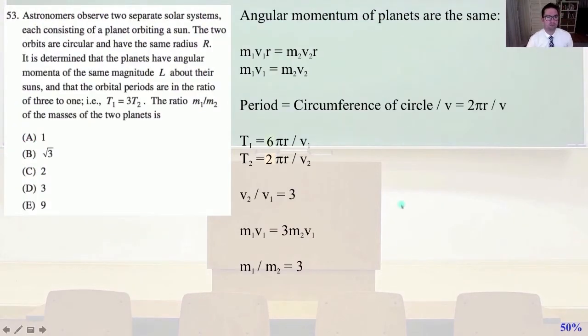53. Astronomers observe two separate solar systems, each consisting of a planet orbiting a sun. The two orbits are circular and have the same radius R. It is determined that the planets have angular momenta of the same magnitude L about their suns and that the orbital periods are in the ratio of 3 to 1, i.e. T1 equals 3 T2. The ratio M1 divided by M2 of the masses of the two planets is...